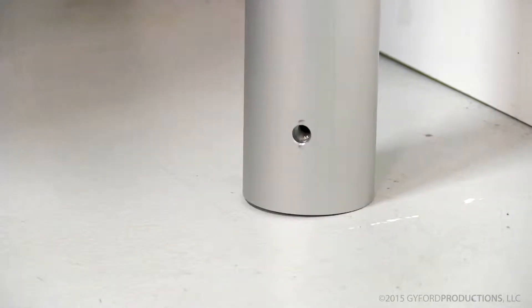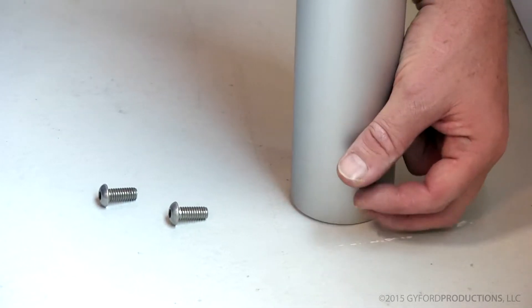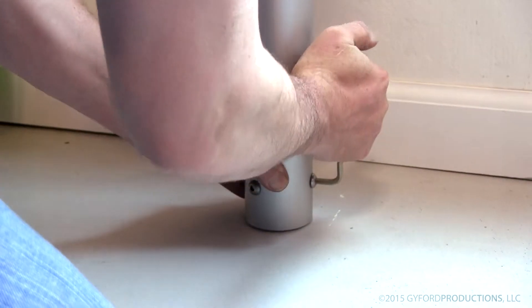Slide the tube over the base mount and install the three button head screws. Tighten these down as well.